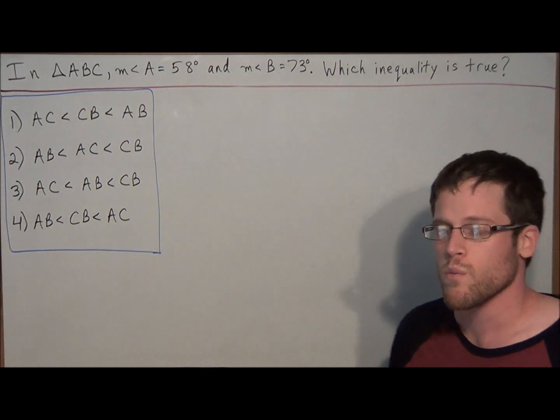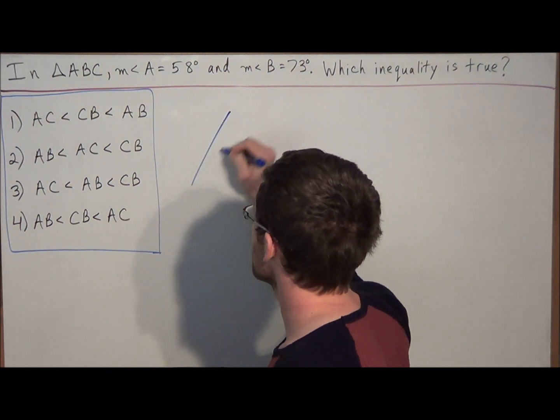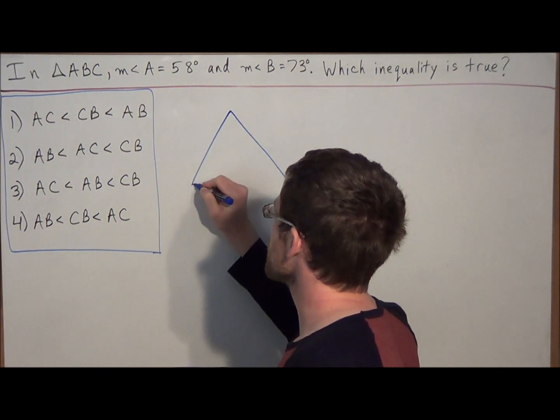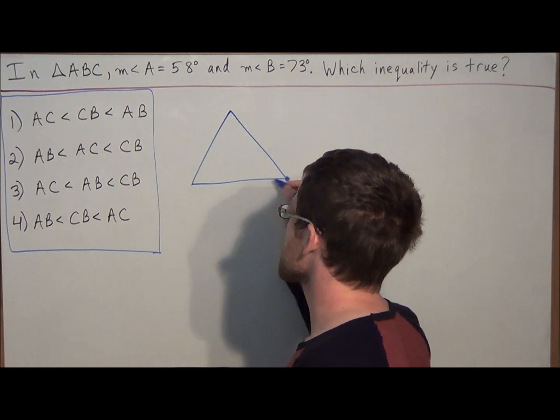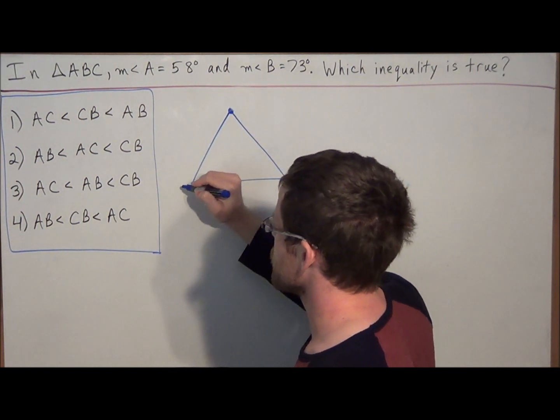Notice with this problem that we don't have a diagram so the first thing we should do is draw a picture of triangle ABC. Now since we're using this diagram just to help us figure out what's going on, it doesn't matter that it's not necessarily drawn to scale.